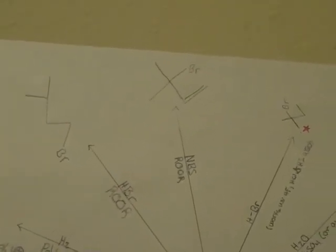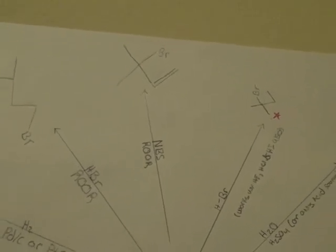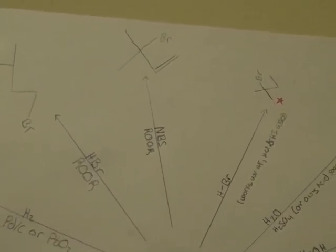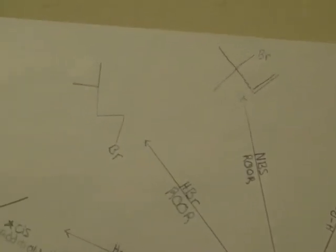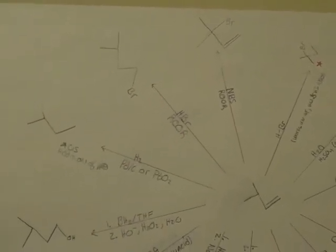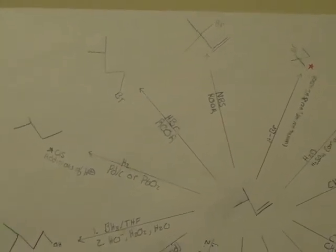NBS ROOR will add bromine allylically or in other words on the carbon next to the double bond or adjacent to the double bond. Keep in mind that in order for that to work, there needs to be a hydrogen on that carbon for the radical to abstract, causing the radical to form in the first place. So yeah, just no tertiary carbons over there and you should be good.